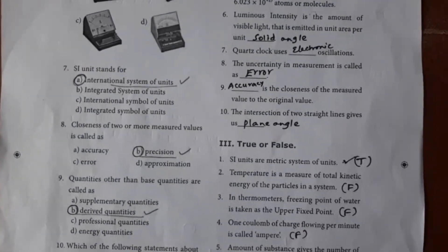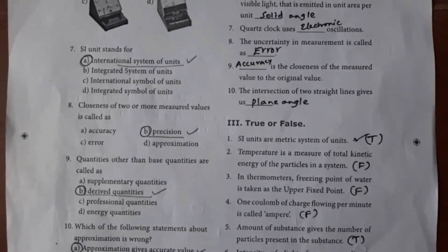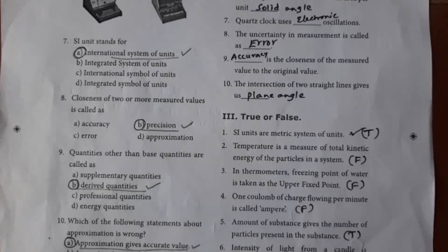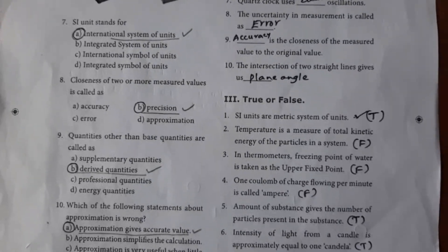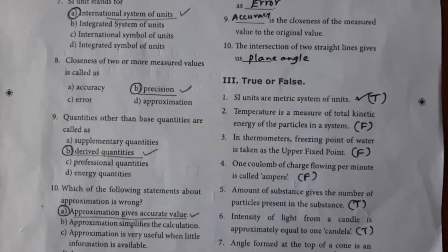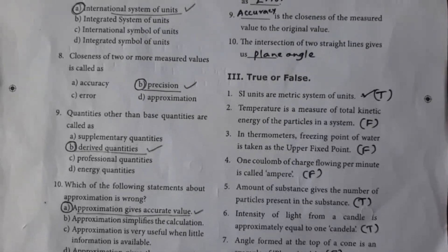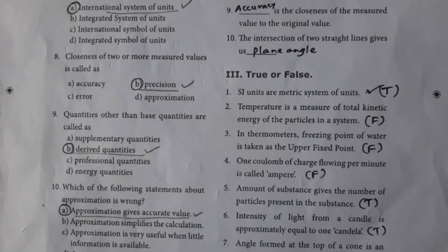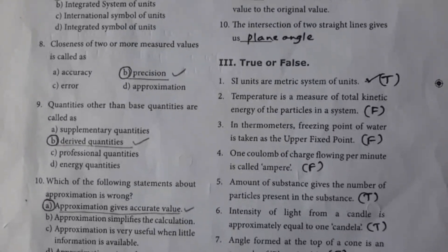The closeness of two or more measured values is called precision. That is one instrument. That is the target value, the original value and actual value. That is the top reading, the precision instrument. That is the answer.